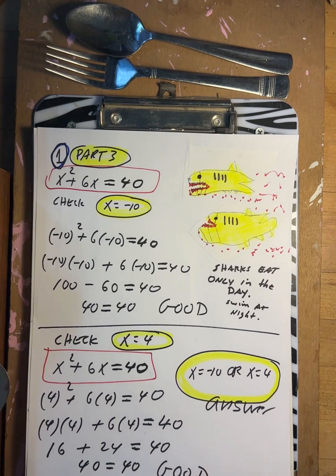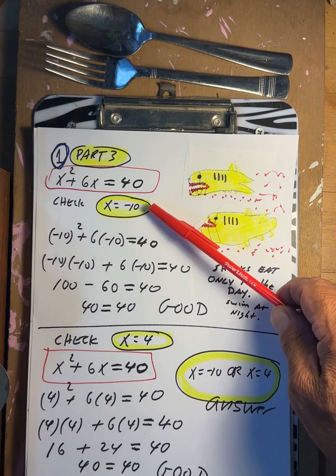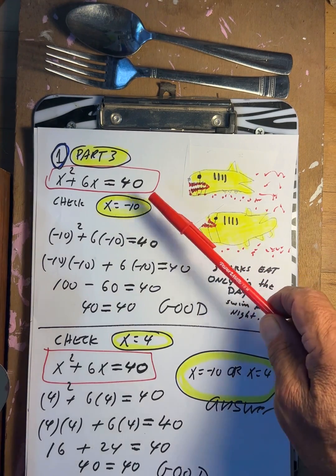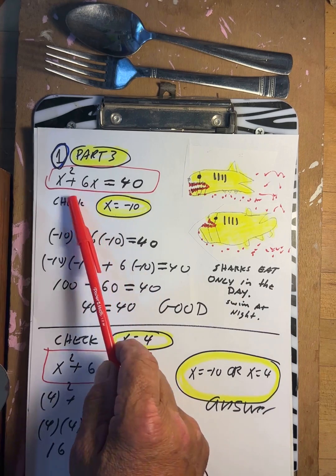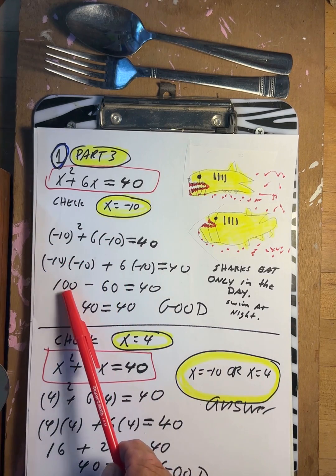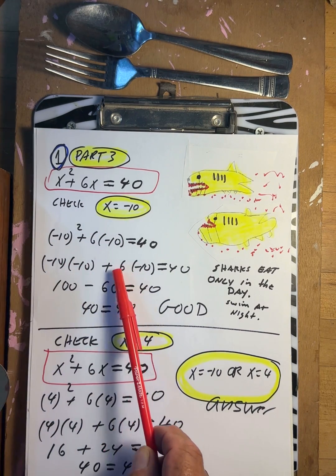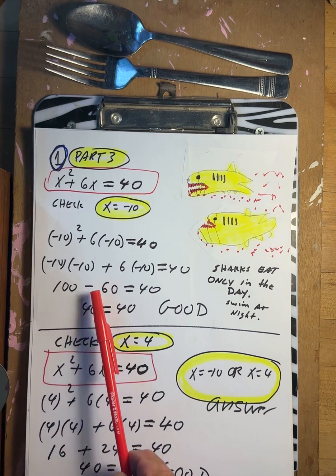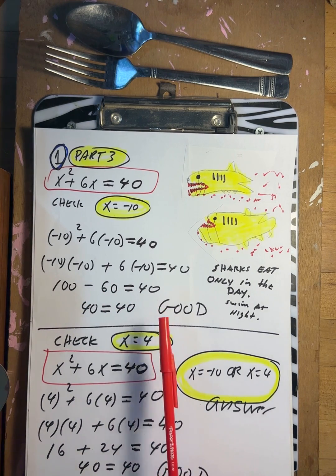Let's check it out. So x squared plus 6x equals 40. We're saying maybe negative 10 works. Try it. Negative 10 there, negative 10 there for the x. Negative 10 squared is 100. Use your calculator if you want to. That turns out negative 60. 100 minus 60 is 40. Is 40 equal to 40? Yes, good. That works.